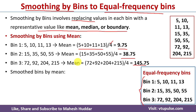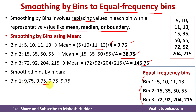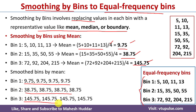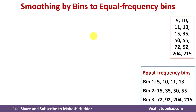Now we will find the smoothed bins. Smoothed bins means we replace all data points with the respective mean value. For the first bin, all values are replaced by 9.75. For the second bin, all data points are replaced with 38.75. For the third bin, all data points are replaced by the mean value 145.75. Next we will go for the median calculation.